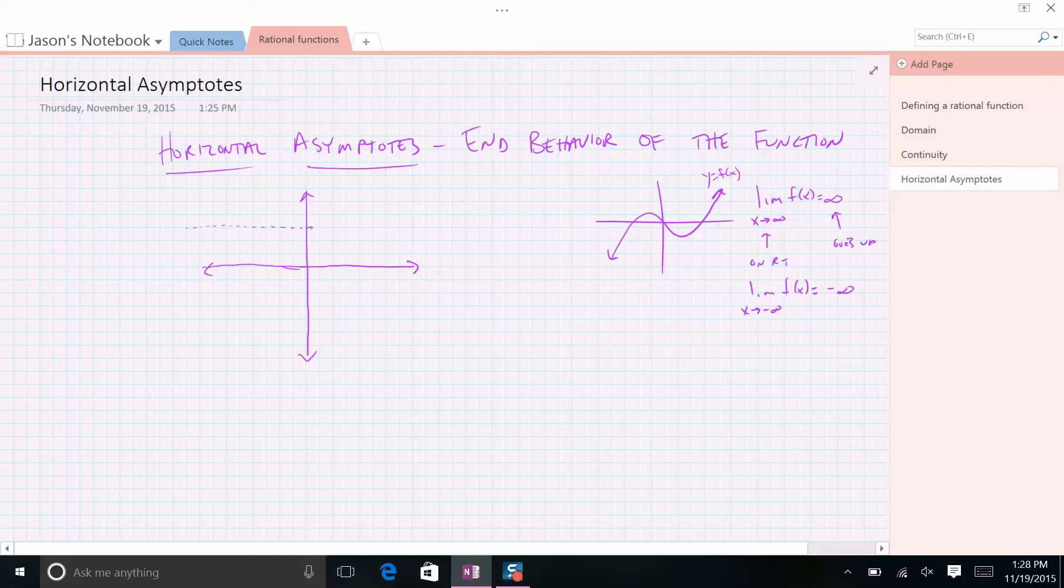They can have a horizontal asymptote here, a vertical asymptote here. One, two, three, four, and one, two, I'll put one over here as well.